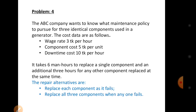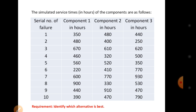The repair alternatives are: first, replace each component as it fails; second, replace all three components when one fails. The simulated service times are as follows — Event 1: component 1 is 365 hours, component 2 is 680 hours, component 3 is 64 hours per breakdown. Event 2: component 1 is 680 hours, component 2 is 680 hours, component 3 is 680 hours per breakdown.